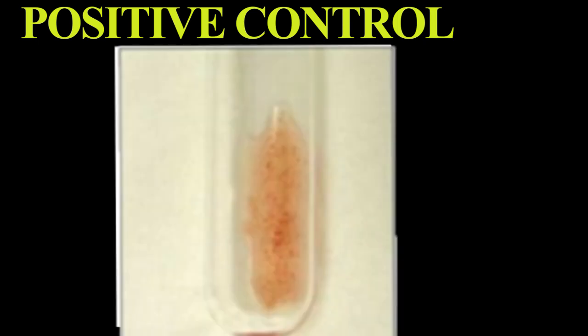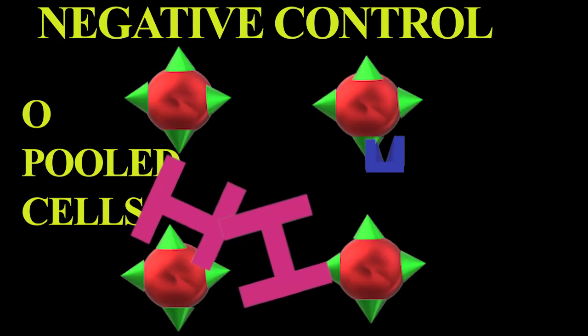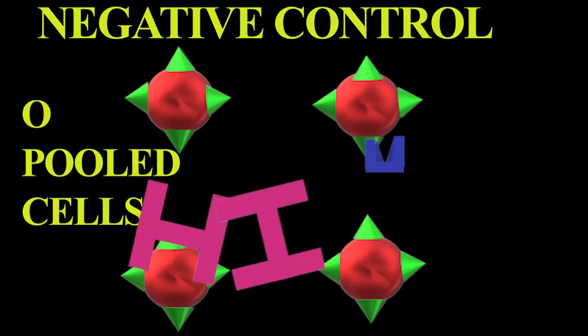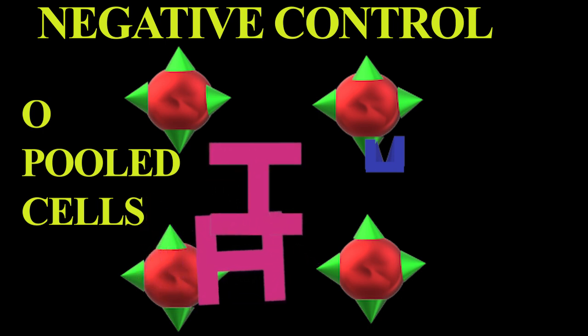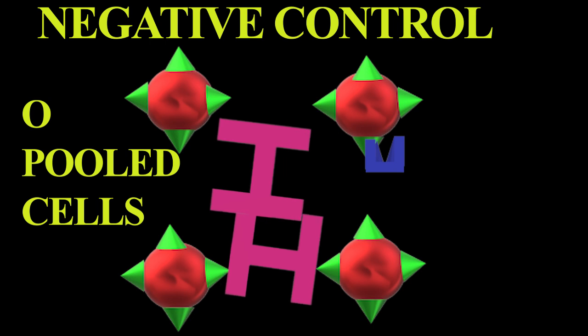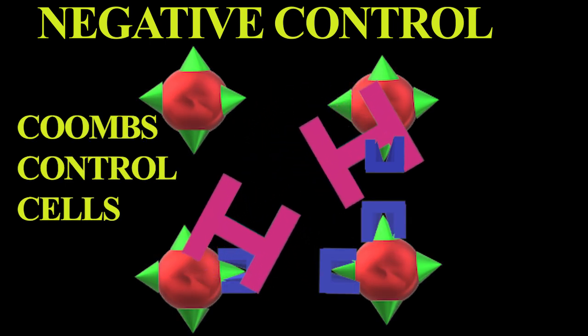Add one drop of Coombs serum and one drop of VAST Coombs control cells. It should give you agglutination microscopically or macroscopically or hemolysis. The negative control: anti-human globulin, that is Coombs serum, one drop and one drop of VAST O pooled cells. It should give negative results, that is no agglutination.